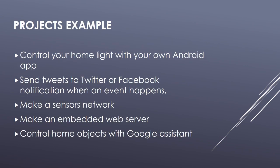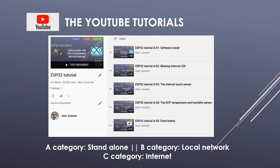These are some examples of projects that you can make. In this list of tutorials, you will find more than 40 videos divided into 3 categories. The A category is for the standalone — you will learn how to connect basic components like LEDs, sensors and motors, and use the ESP32 like an Arduino board. The B category is for projects on a local network. The C category is for projects using connectivity to the internet.